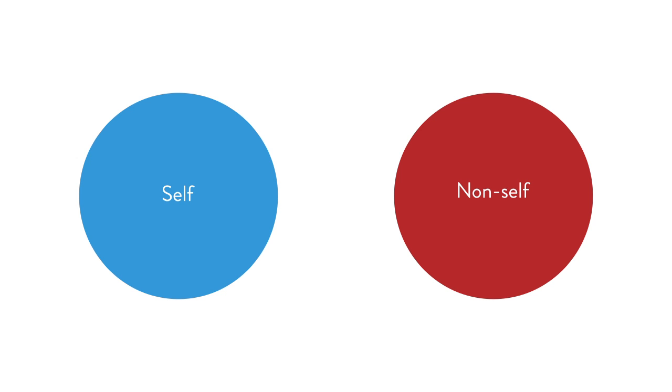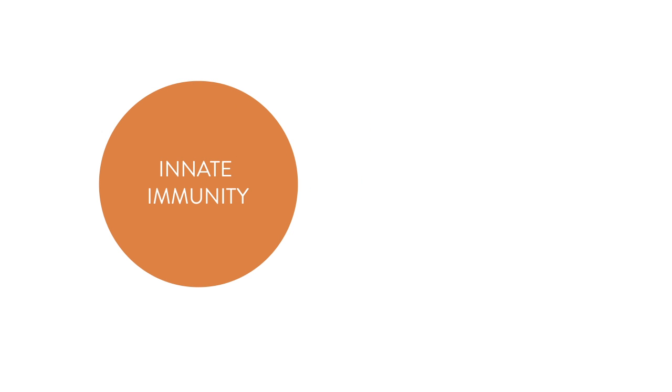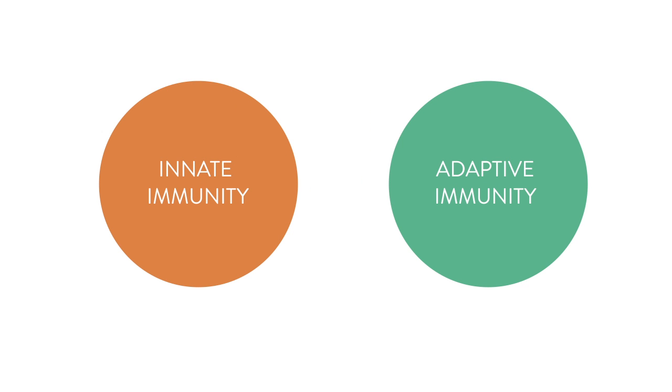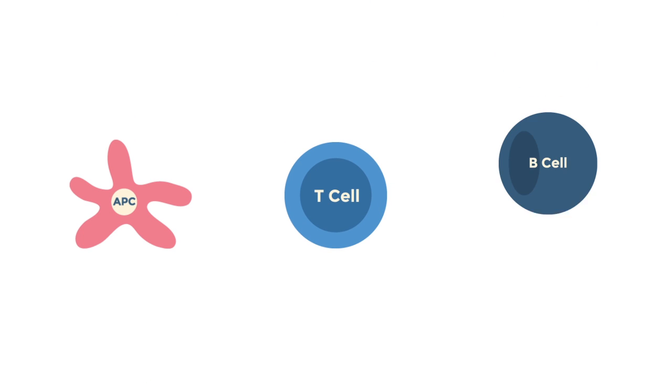Let's talk about some of the other cells involved. In most parts of the body including your eye we have the innate immune system which reacts with the adaptive immune system. We have the antigen presenting cell, the T cell and the B cell. Let's talk about these in detail.